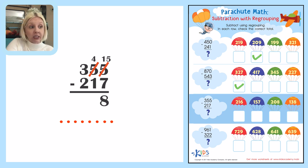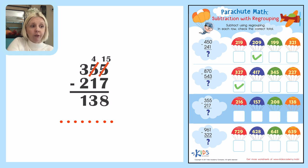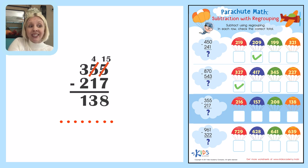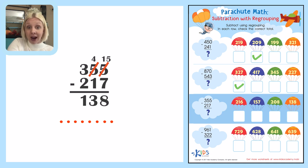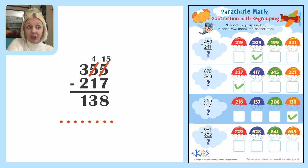Then four minus one is going to be three. And three minus two is going to be one. So the answer is 138. I'm going to come over here and look for 138 — there it is, 138. If I didn't find the number over here, that would let me know I did something wrong. So always make sure you see the number. Since I do, I'm going to go ahead and check it.